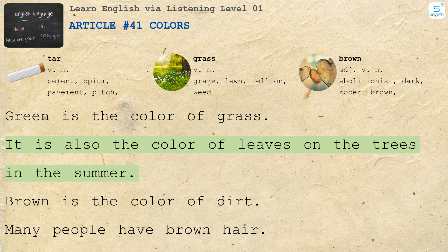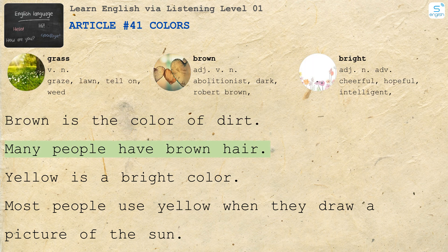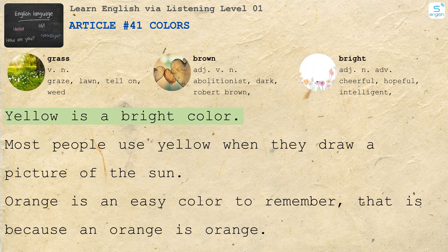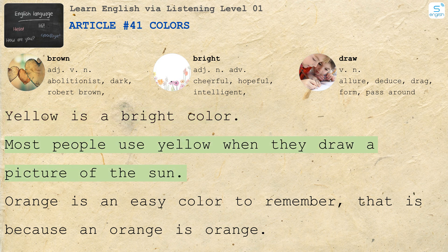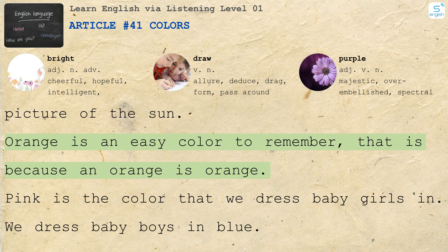Green is the color of grass. It is also the color of leaves on the trees in the summer. Brown is the color of dirt. Many people have brown hair. Yellow is a bright color. Most people use yellow when they draw a picture of the sun.